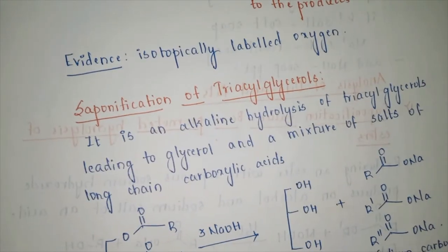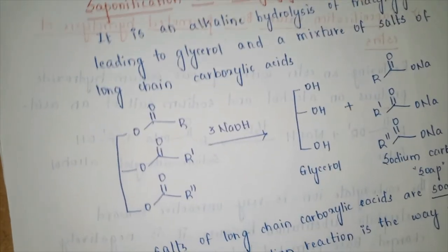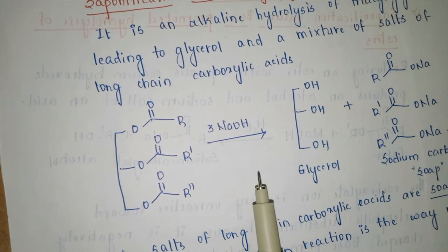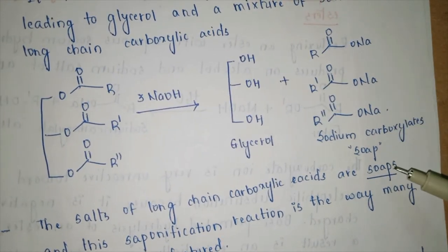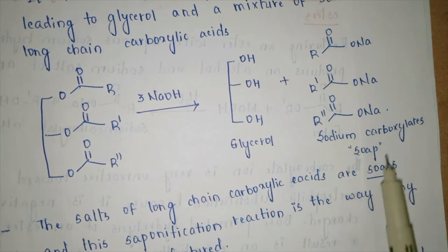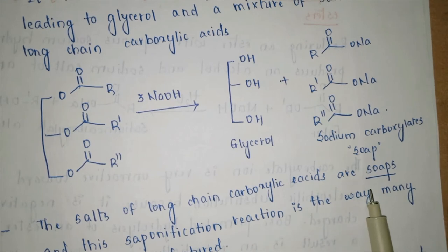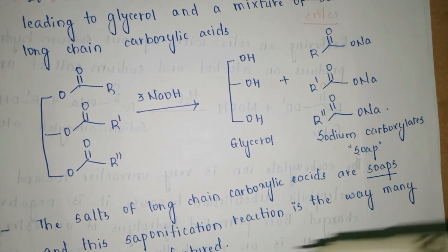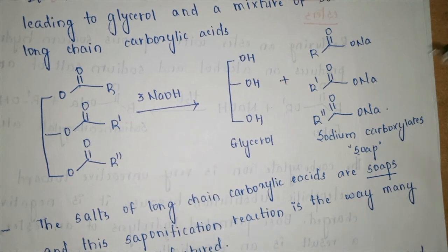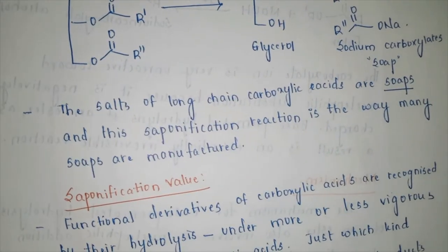In saponification of a triacylglycerol, the ester reacts with three moles of NaOH to give glycerol and sodium carboxylate (soap). The salts of long-chain carboxylic acids are soaps — either mixed or pure depending on whether R, R', and R'' are the same or different. This saponification reaction is how most soaps are manufactured: glycerides are treated with NaOH or KOH to give a mixture of soaps.